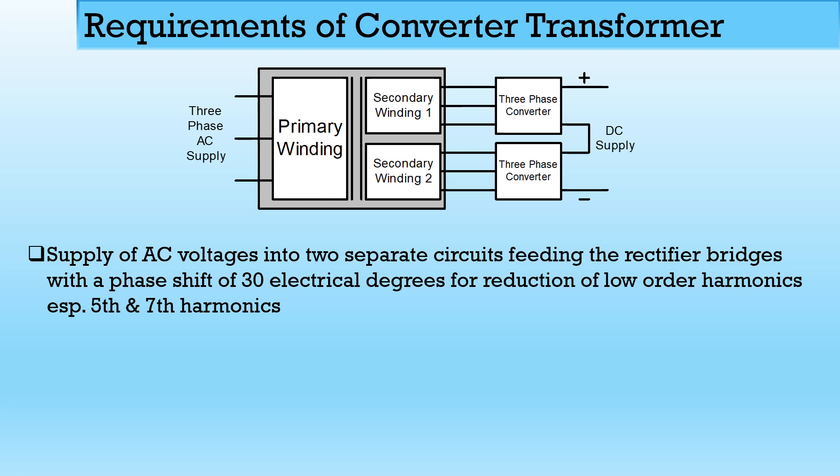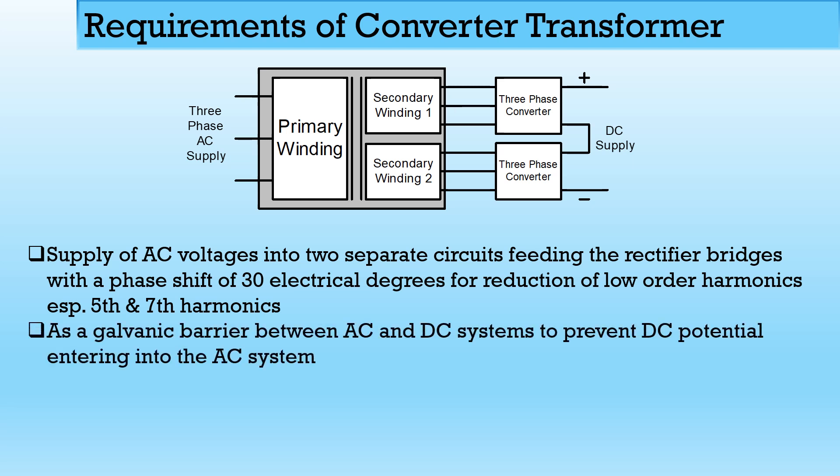The first winding supplies 0-degree phase shift and the second winding supplies 30-degree phase shift. Another requirement is to act as a galvanic barrier between the AC and DC system to prevent DC potential from entering into the AC system. If we connect AC directly to the converter, it will not provide galvanic isolation, so noise signals and harmonics would be easily introduced into the AC supply. The converter transformer keeps the isolation between them.